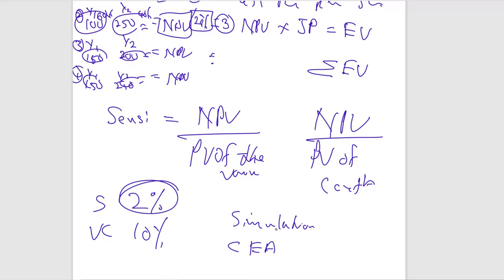The certainty equivalent approach reduces expected cash flows to account for risk — for example, reducing an expected 5,000 to 3,000 — then uses the risk-free rate to calculate NPV and make the decision. The risk-adjusted discount rate (RADR) approach adjusts the discount rate based on the risk level of the project and uses that rate to find the present value.